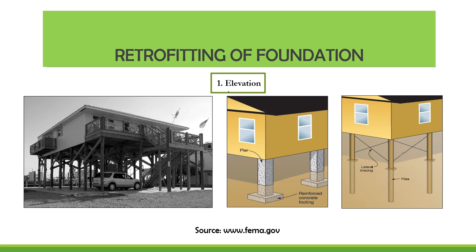For foundation retrofitting, the first method is elevation — applicable when a building is exposed to flooding. As shown in the picture, the building is retrofitted by elevating it. Elevation can be done using piles, columns, or structural walls. However, a disadvantage of elevating a building against flooding is that it significantly affects the appearance of the building.